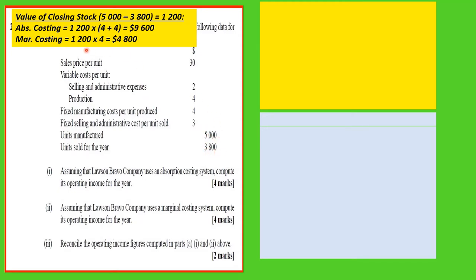Using absorption costing, the value of the closing stock would be 1,200 multiplied by the production cost — both fixed and variable — which is $8 per unit. So 1,200 by 8 gives us $9,600 as the value under absorption costing.